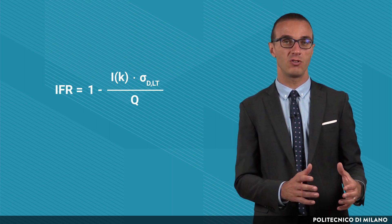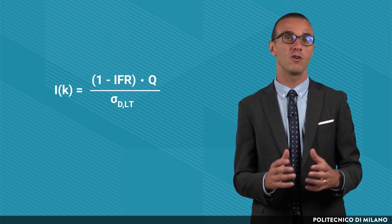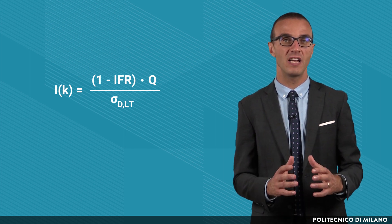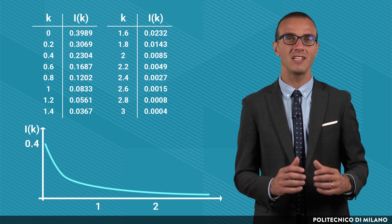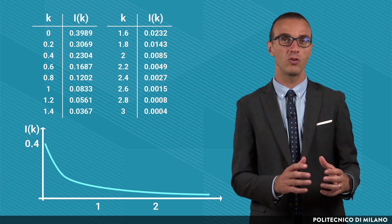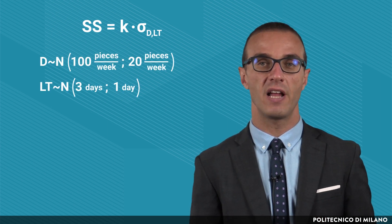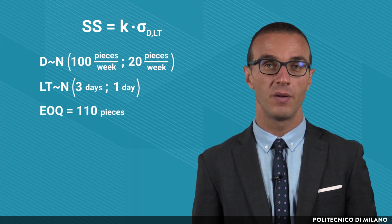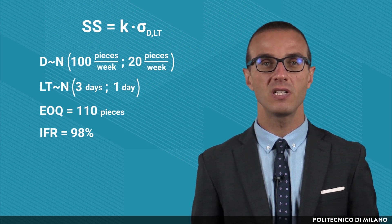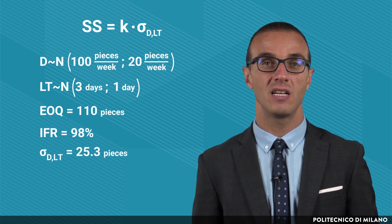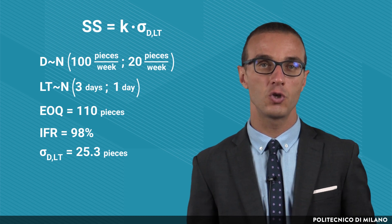Once the demonstration behind the formula has been illustrated, we now see how to apply it to derive the value of K. First, I(K) has to be derived as shown in the picture. Second, the I(K) value obtained has to be found in the normal loss integral table, and the corresponding K value is the one associated to the desired service level, which will be used to compute the safety stock. Let's consider the same input data from the previous lecture, but now knowing that the order quantity Q is 110 pcs. We are considering the reorder point model, and the objective fill rate is 98%. The composite standard deviation of the demand during the lead time does not change and is equal to 25.3 pcs.